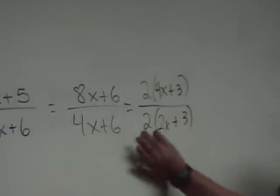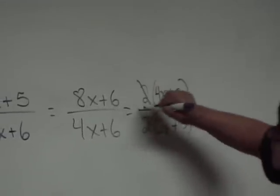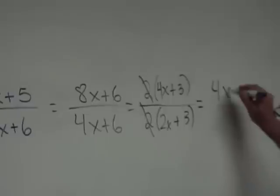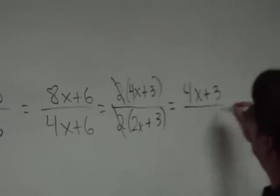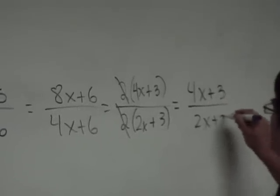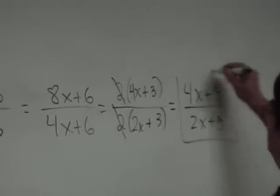But here, I have these common factors. So what's my final answer? 4x plus 3 over 2x plus 3. And you cannot simplify this anymore.